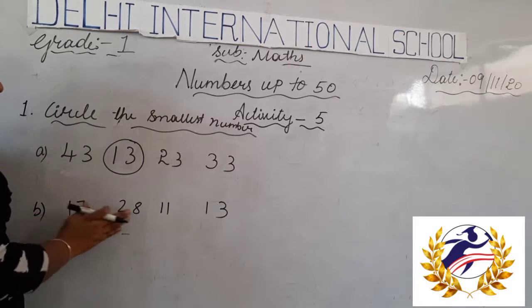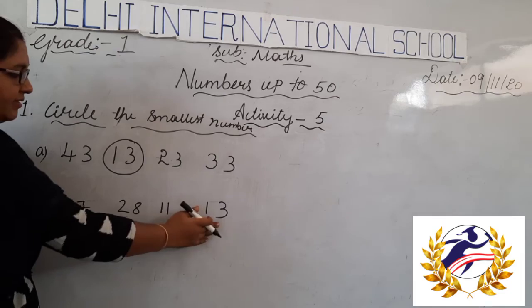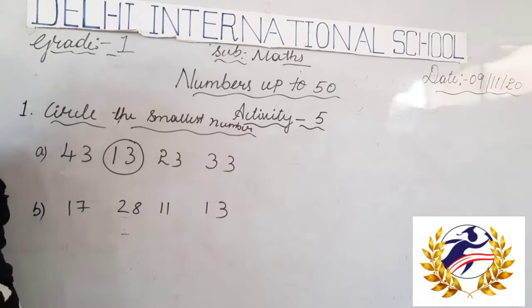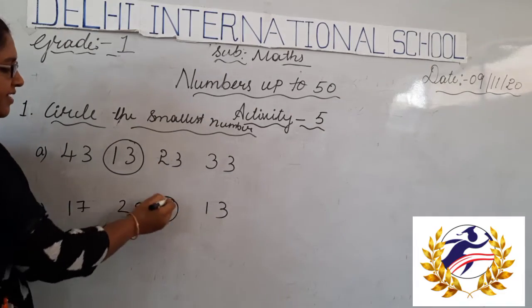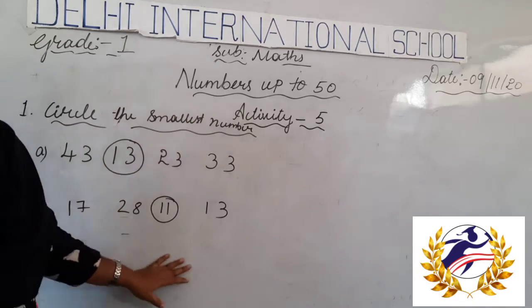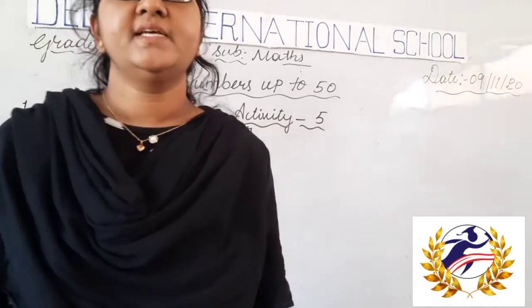Next, the numbers are 17, 28, 11, and 13. Which is the smallest among these numbers? That is 11. 11 is the smallest number among the given numbers.